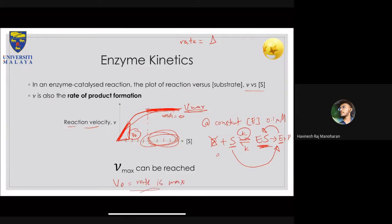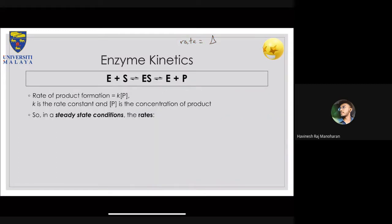This v-naught value is what you use to say one enzyme is faster than another. The ultimate goal is to look at the rate of product formation. The rate of product formation is k₂ × [ES] — k₂ is the rate constant and [ES] is the concentration of the enzyme-substrate complex. You want to know how fast the product is being formed.